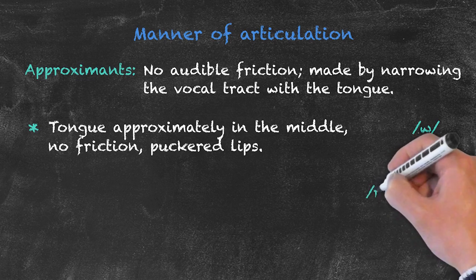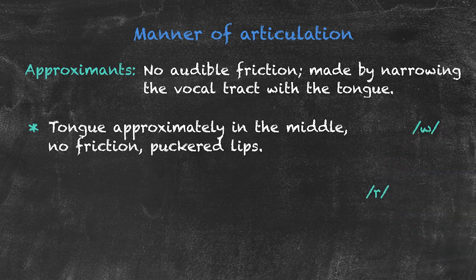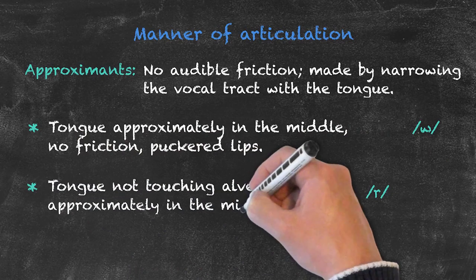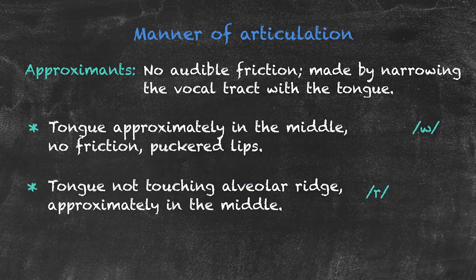Next we have our R sound. Again, there isn't any audible friction within our vocal tract here, and it's a very difficult sound to produce. It's very close to the lateral sound, but the key differentiation is that our tongue is not touching our alveolar ridge — it's approximately in the middle of our mouth. Finally, we have our Y sound, and Y is just approximately in the middle as well — it's not causing any audible friction.